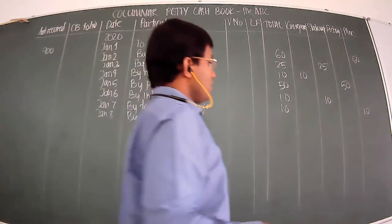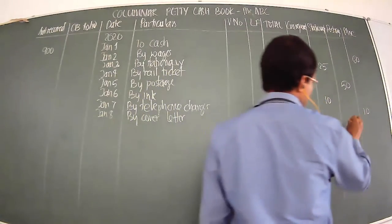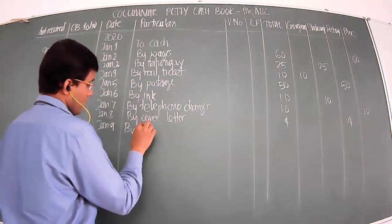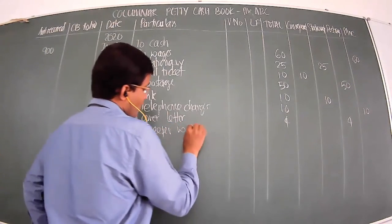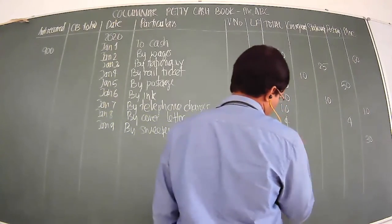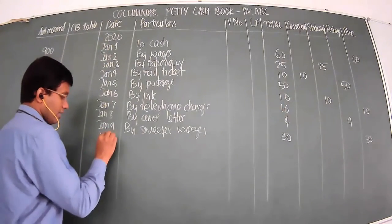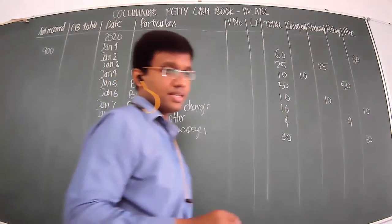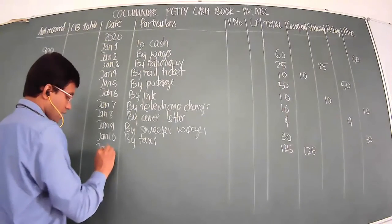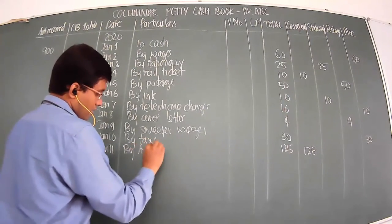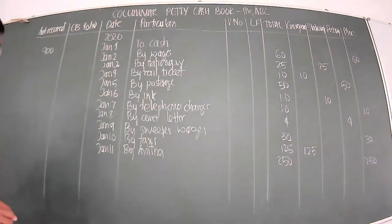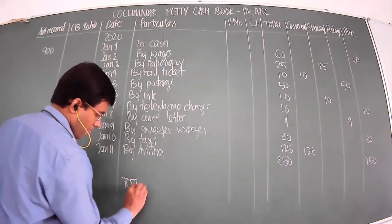January 8th: By Cover Letter - rupees 4. This comes under postage, total 4. January 9th: Sweeper Wages - rupees 30. This gets recorded under miscellaneous, total 30. January 10th: By Taxi - rupees 125. Taxi is conveyance, so it's recorded under conveyance, total 125. January 11th: By Anita - this will be recorded in miscellaneous.